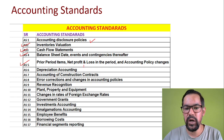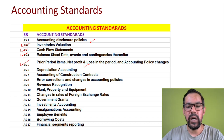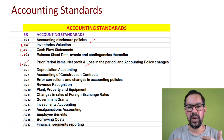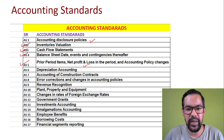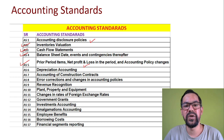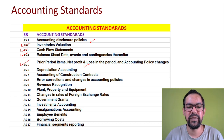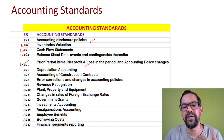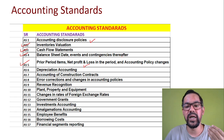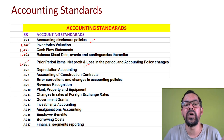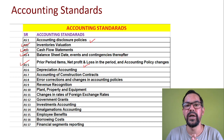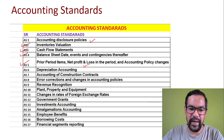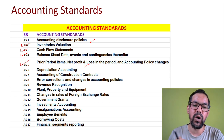Accounting Standard 5 covers Prior Period Items, Net Profit or Loss for the Period, and Accounting Policy Changes. It generally deals with the treatment of prior period and extraordinary events. If there is any extraordinary event, or debit/credit entries arising in the current year as a result of omissions or mistakes in prior periods — or disposal of fixed assets — all these entries come under Accounting Standard 5.